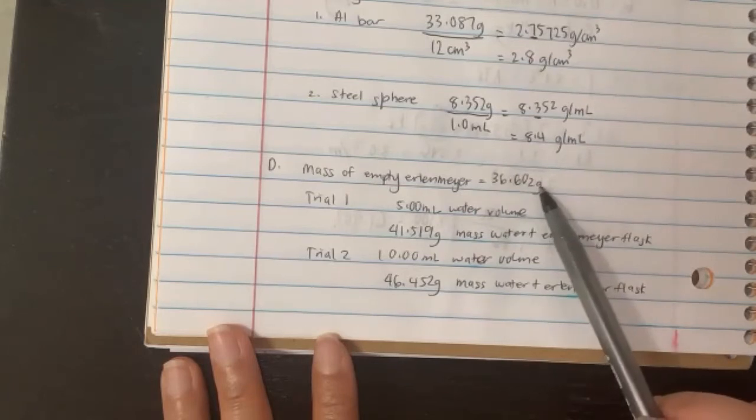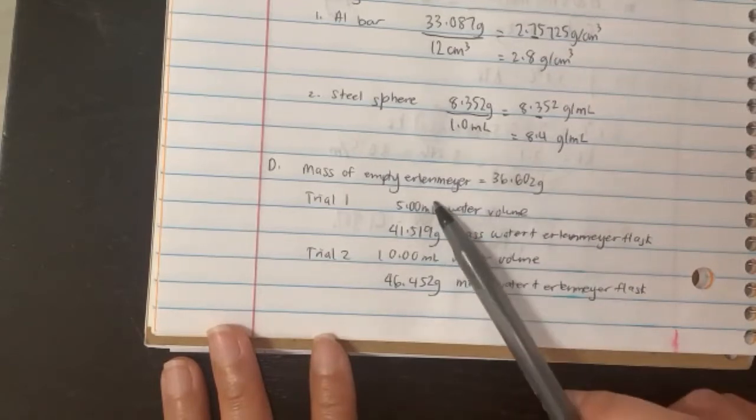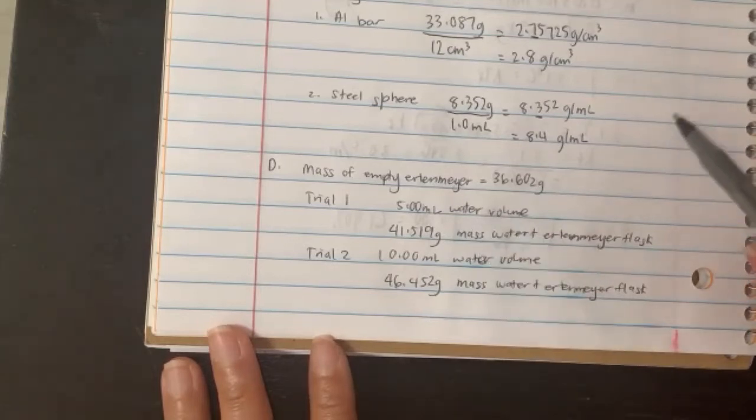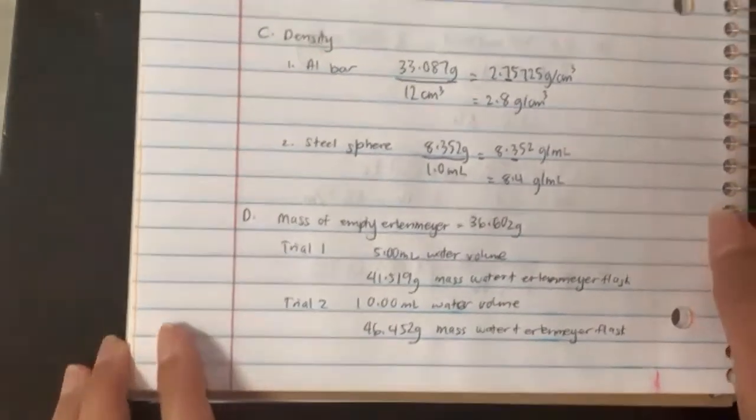When they ask you to calculate mass of just water, make sure you take this number and subtract the empty flask to get the true mass of just the water alone. Then take the mass of the water divided by the volume of the water. I'm going to work the math on the side over here.